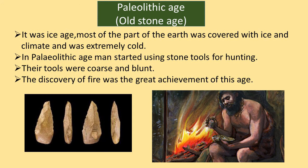Let us know about the Paleolithic Age. Early men were hunters in this age. They were living this type of life because it was an ice age when most of the earth was covered with ice and the climate was extremely cold. There was no scope for cultivation. They used stone tools for hunting, and their tools were coarse and blunt. Limestone was also used to make tools.